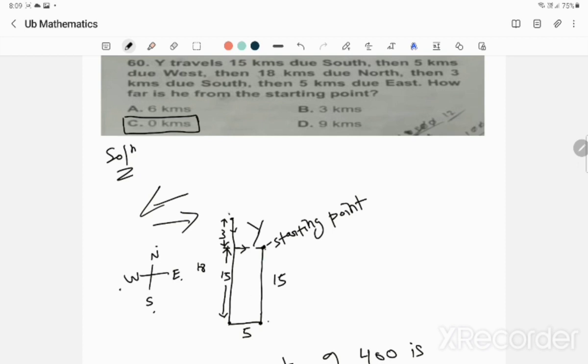He moves 15 meters south, then 5 meters west, then 18 meters north, then 3 meters south, then 5 meters east. The 5 meters east brings him back to his starting point. So he is zero kilometers from his starting point because he came back to where he started. The answer is zero kilometers.